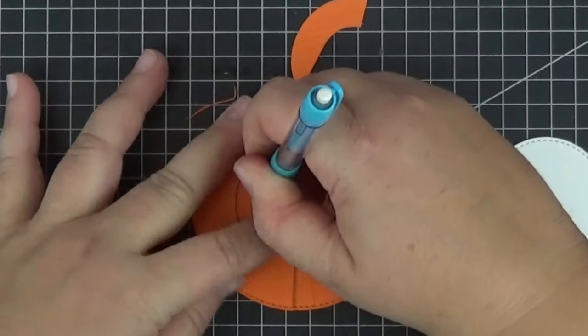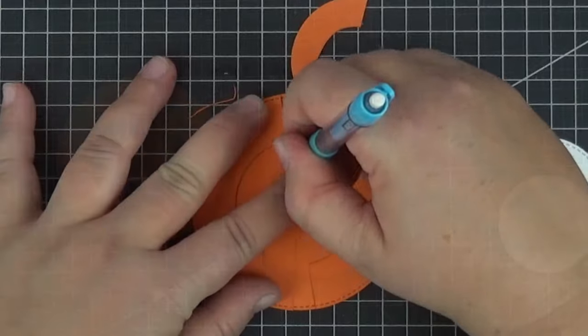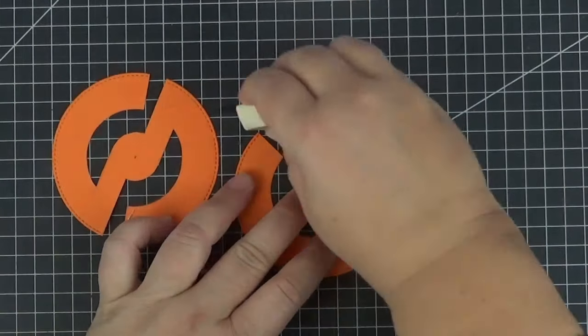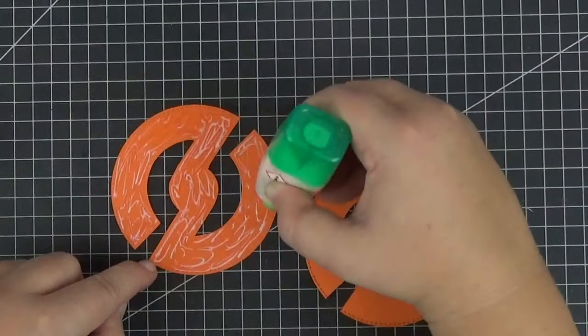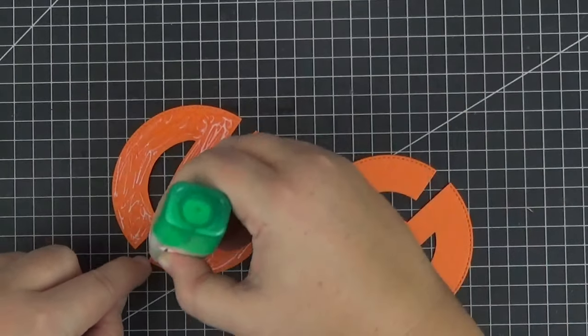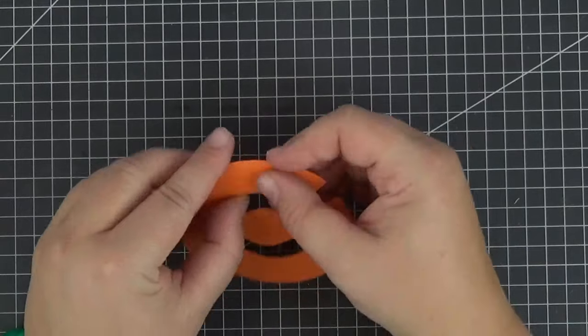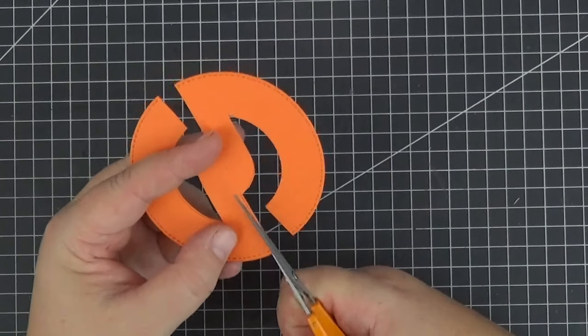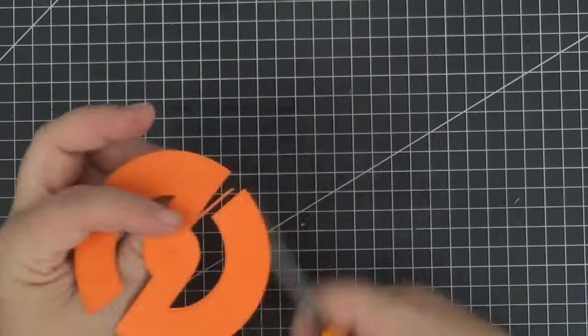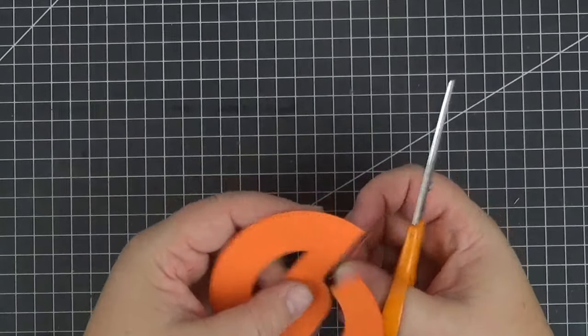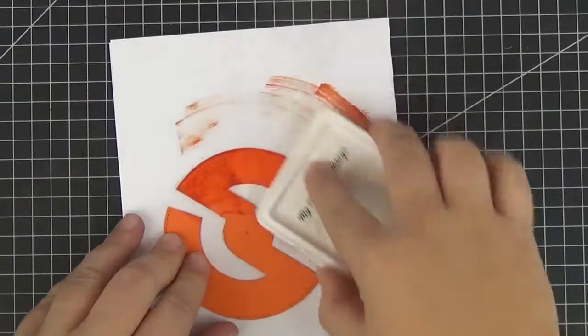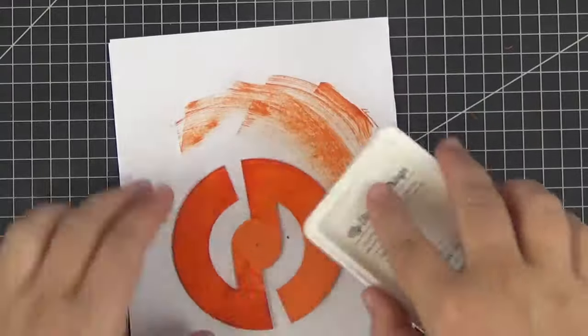I promise this is the last time that we need to trace something for this card. After erasing all of the lines we can use liquid glue to stack the pieces and afterwards you might need to trim some parts like I had to. If you want to add a little bit of texture to the paint strokes just swipe across them with the matching ink.